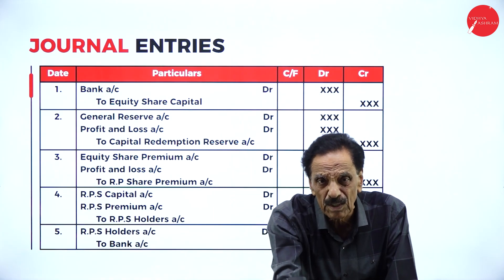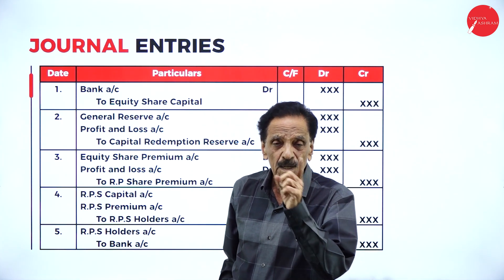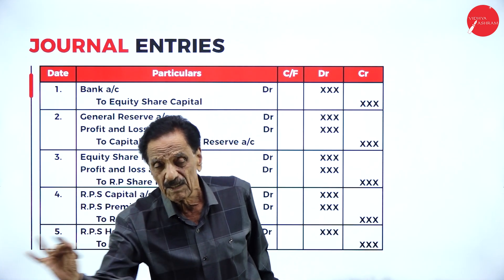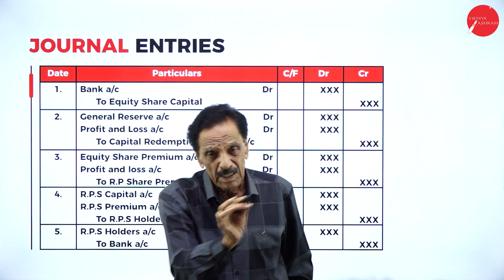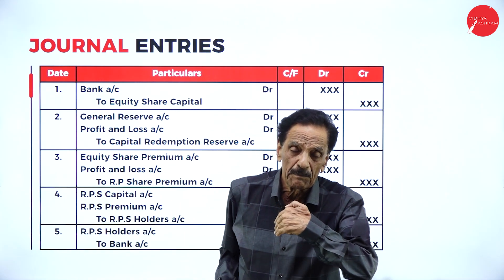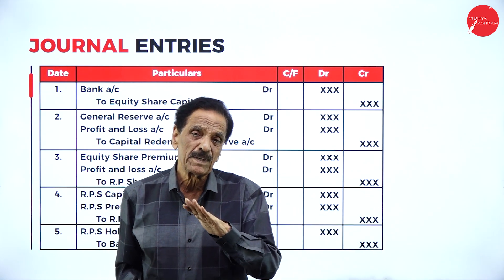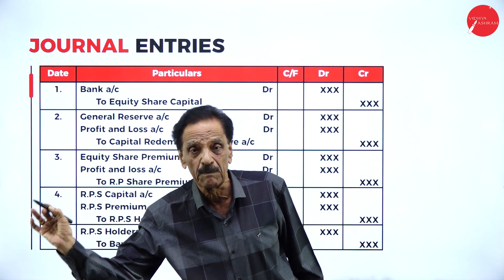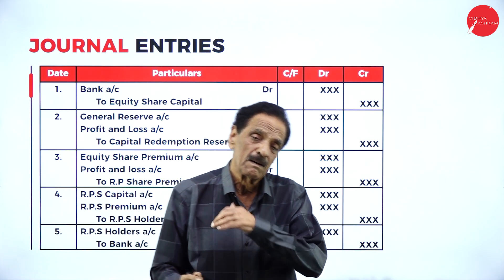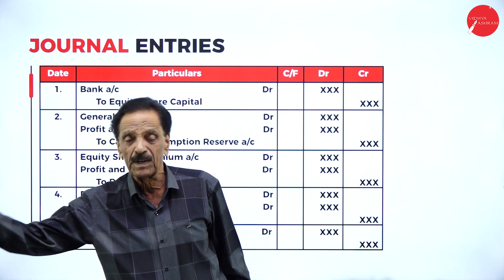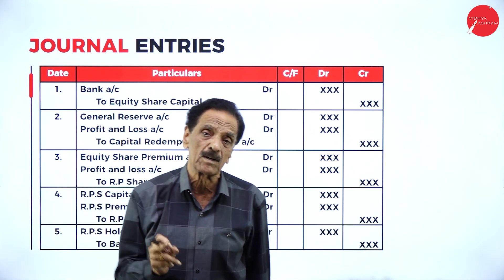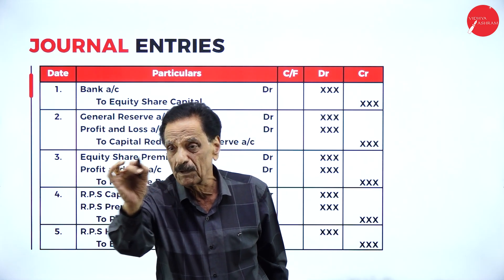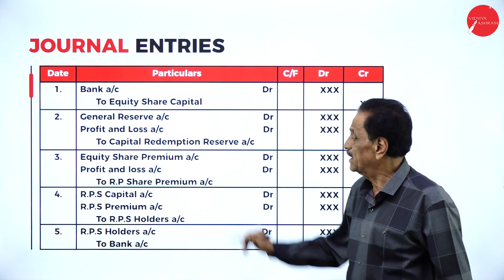These five entries are a must. Entry 1 — Issue equity shares: Bank Account Dr. to Equity Share Capital Account. Entry 2 — Create CRR: General Reserve Account Dr. and Profit and Loss Account Dr. to Capital Redemption Reserve Account. Entry 3 — Pay preference share premium: Profit and Loss Account Dr. and Equity Share Premium Account Dr. to Redeemable Preference Share Premium Account. Entry 4 — Transfer entry: Redeemable Preference Share Capital Account Dr. and Redeemable Preference Share Premium Account Dr. to Redeemable Preference Shareholder Account. Entry 5 — Payment: Redeemable Preference Shareholder Account Dr. to Bank Account.